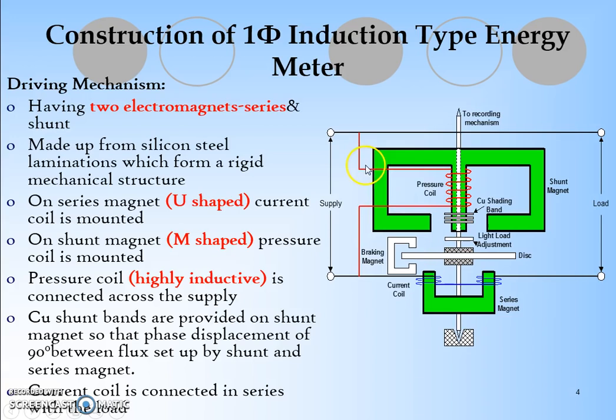Here you can see the series connected magnet is the current coil and the shunt connected magnet is the pressure coil. The current coil and pressure coil are made up of silicon steel laminations which form a rigid mechanical structure. On series magnet, U-shaped current coil is mounted, and on shunt magnet, M-type electromagnet is mounted.